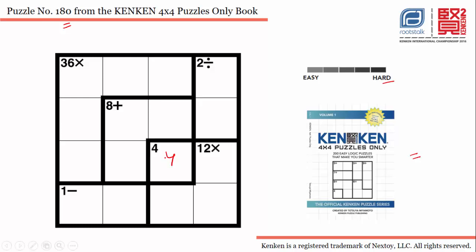I am putting the number 4 in this cell. Now let's talk about this cage — it says 12 multiplication and we have three cells. The possible combinations are 4×3×1, or we can use 2×3×2. So these are the two possible combinations we have.